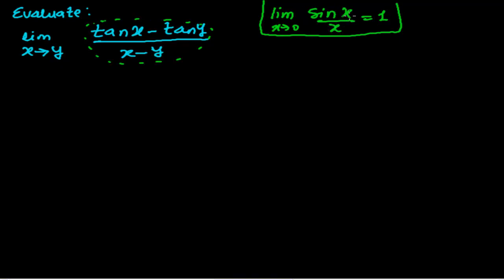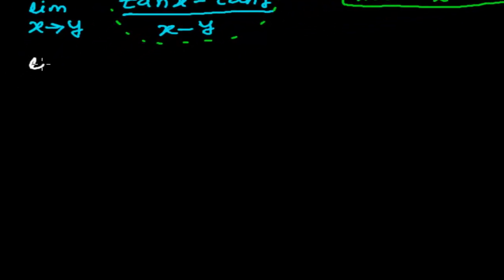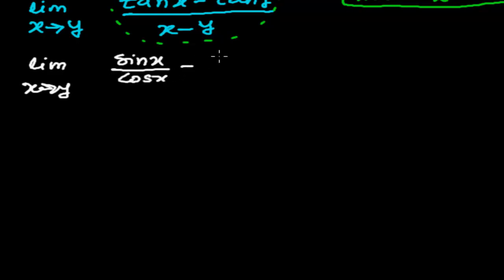The angle may be anything, but we have to convert it into that standard form. As we do in the trigonometric chapter, we convert tan into sin and cos — that always makes things easier. So I am doing the same thing: converting tan x into sin x over cos x, and similarly tan y into sin y over cos y, with the limit when x tends to y.